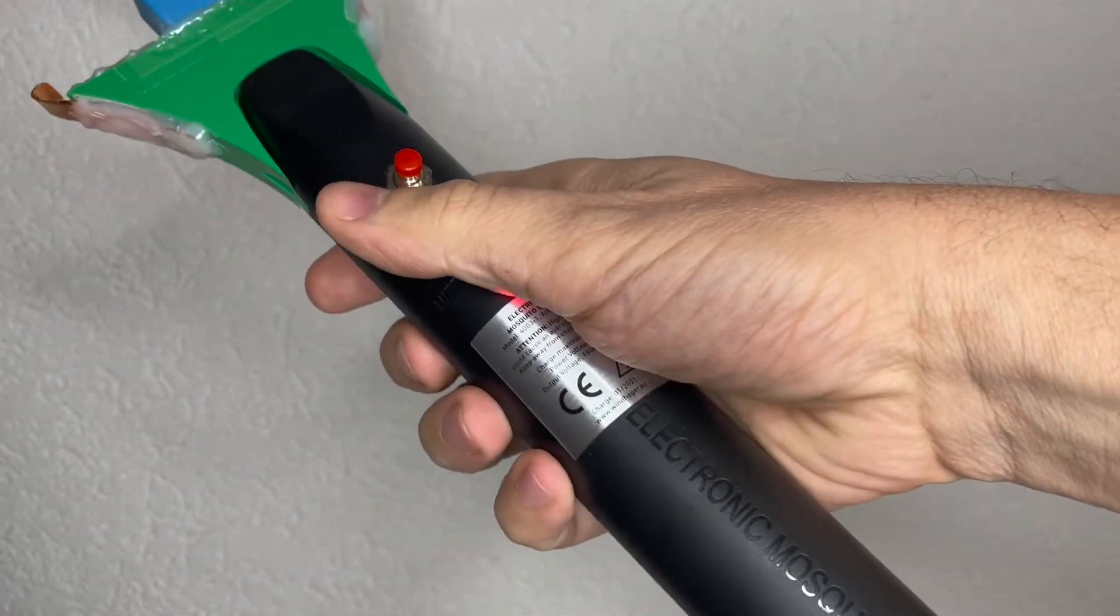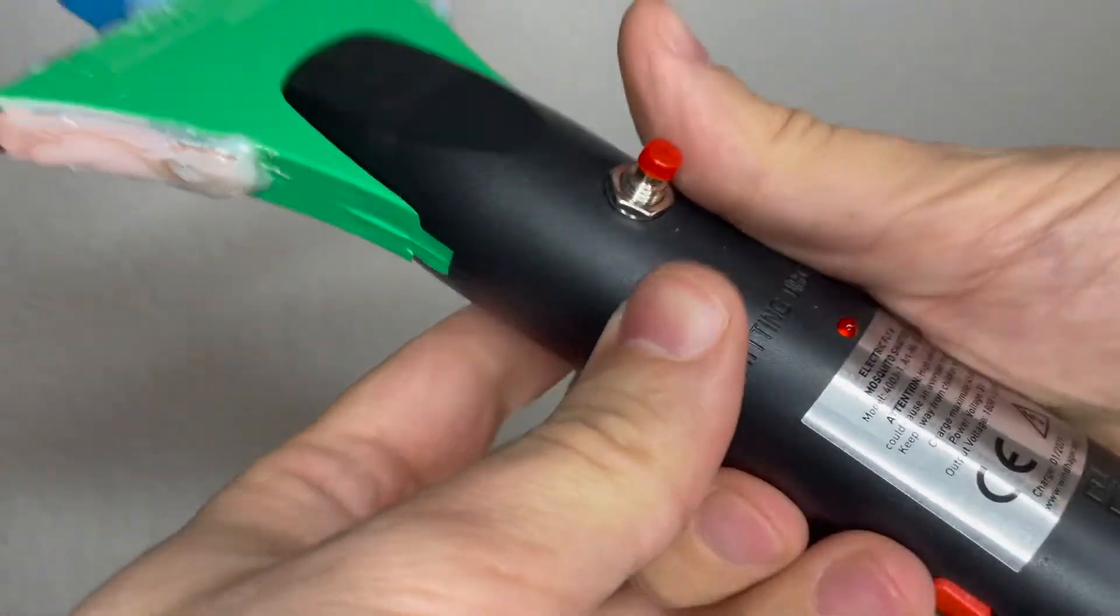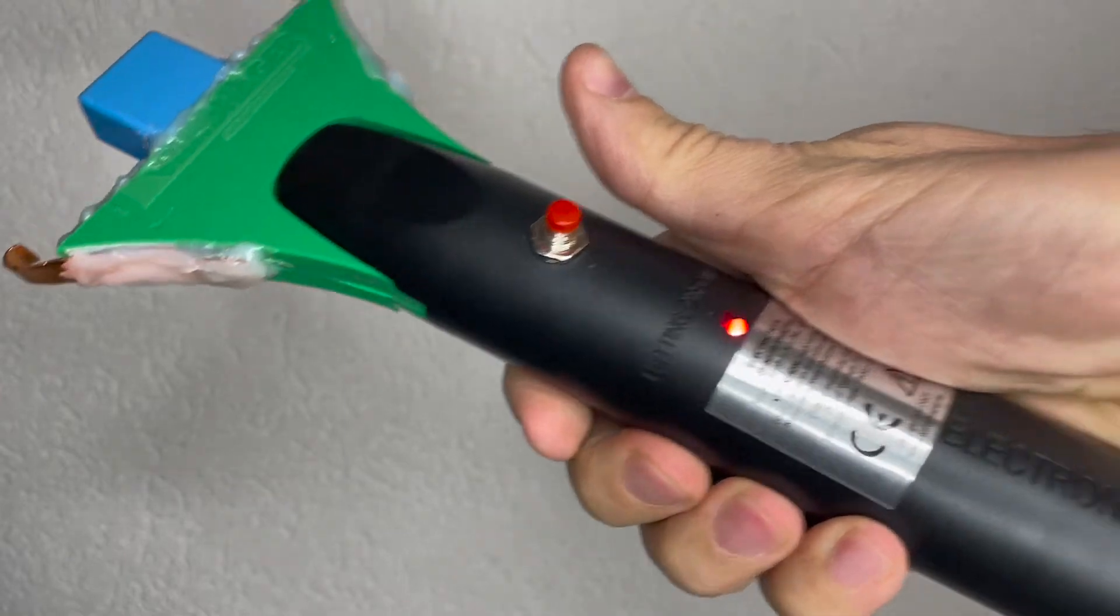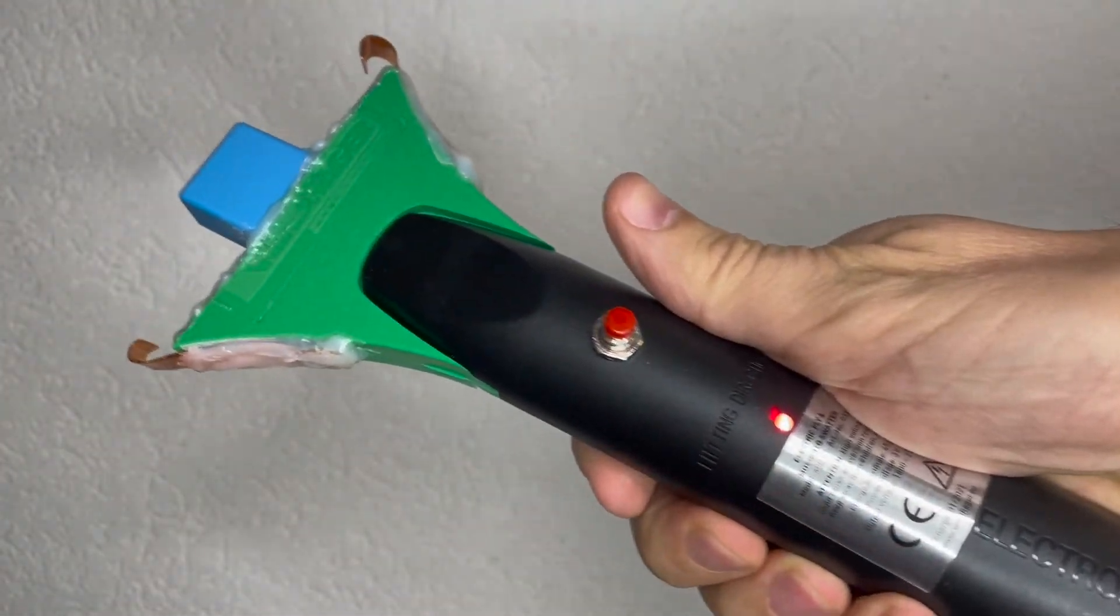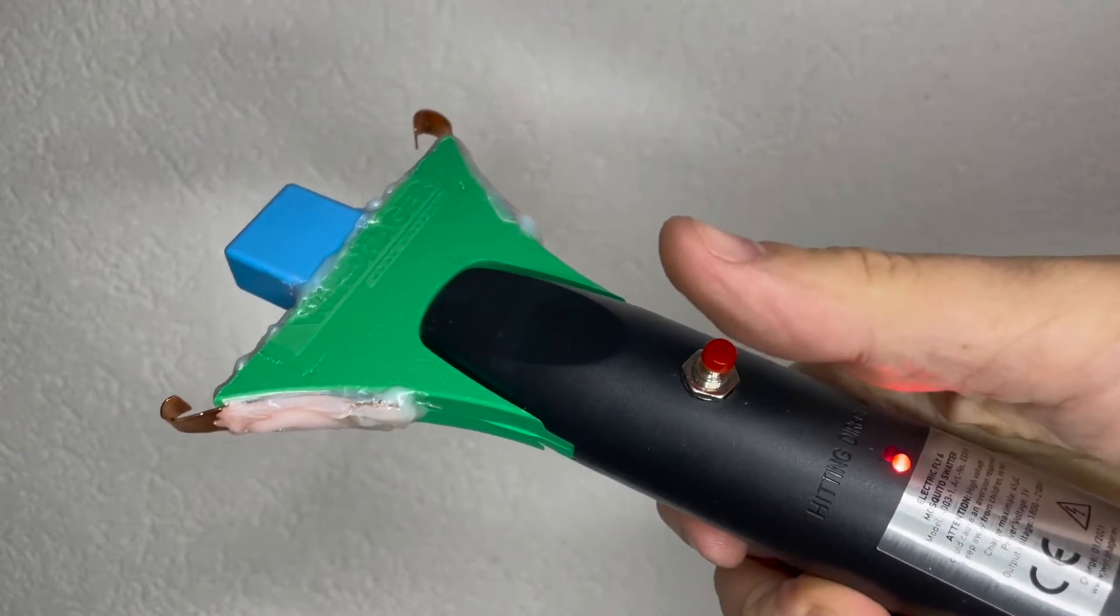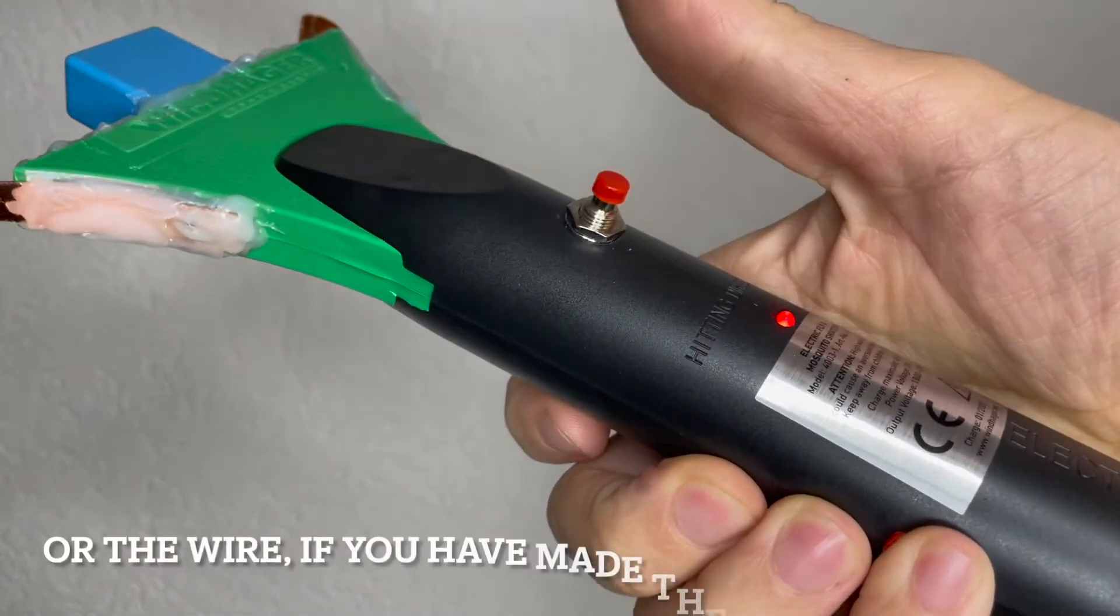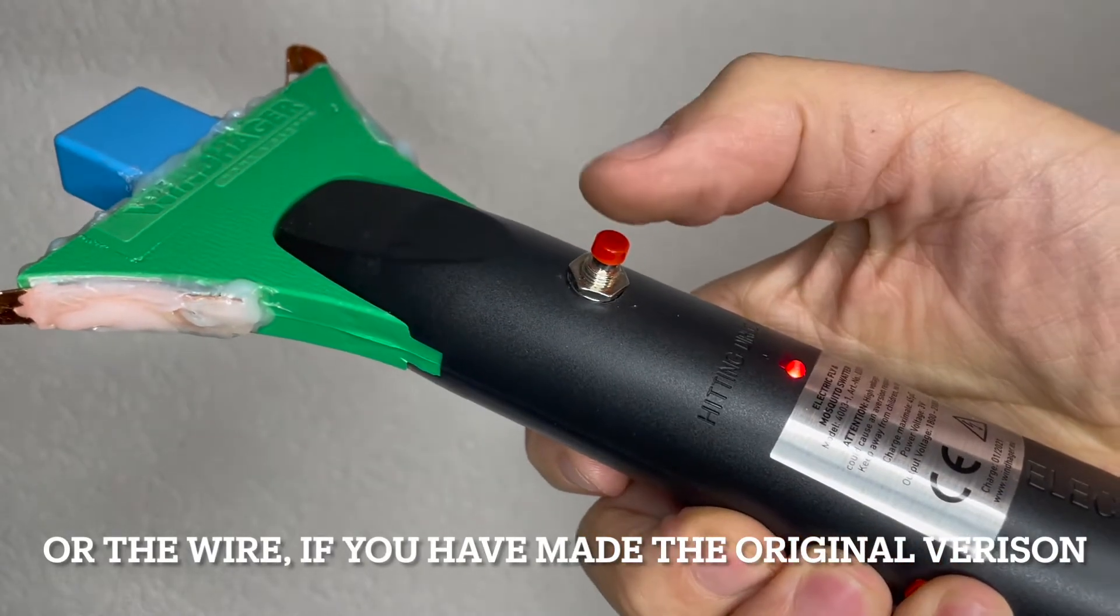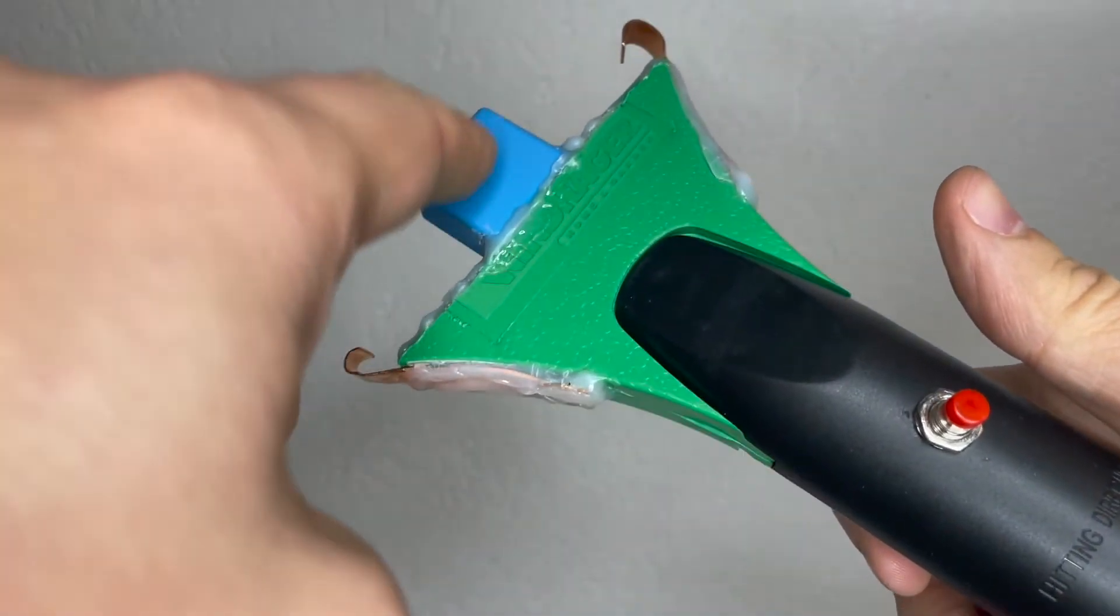So you press with one of your fingers the main switch, the switch that is coming anyway with the racket, you see the light is on. And then just for very short time, very short press, you press, that's it. Only for a small second.